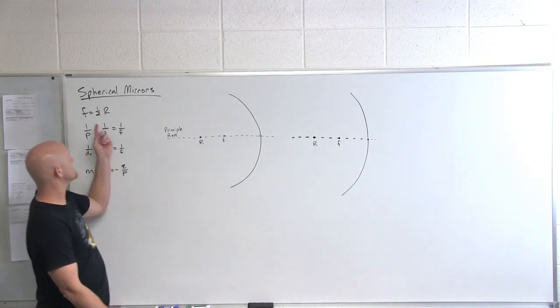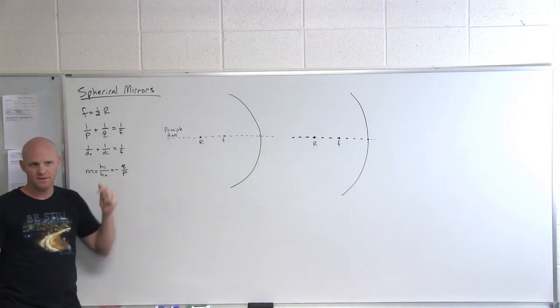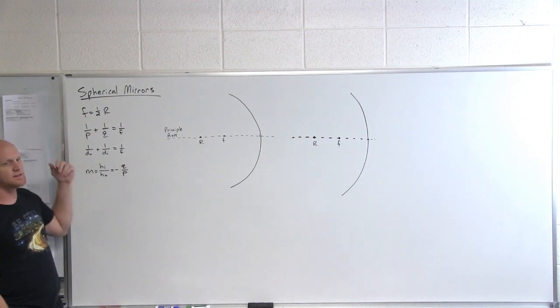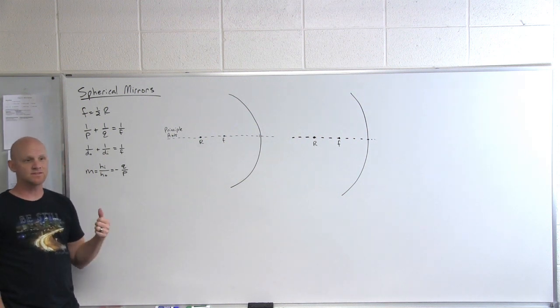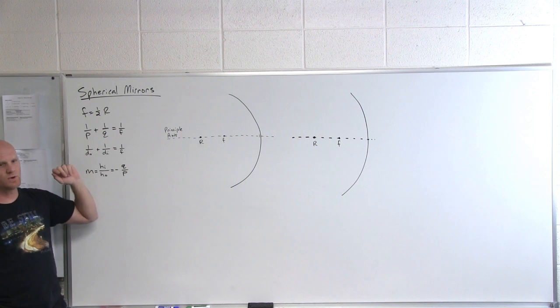If we look, that's the first equation you see here: your focal distance is exactly half the radius of curvature. Your second one here is a little more nebulous. They call this the spherical mirror and thin lens equation. So 1 over P plus 1 over Q equals 1 over F where F is the focal distance.